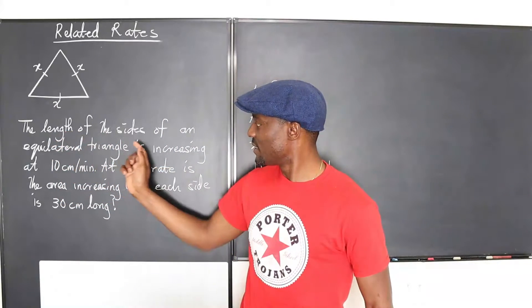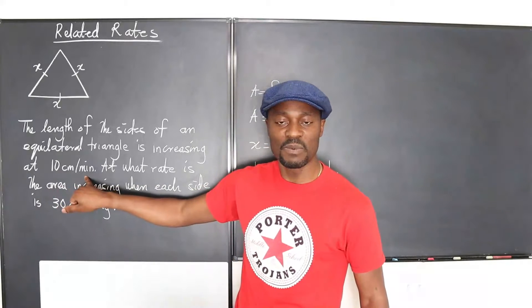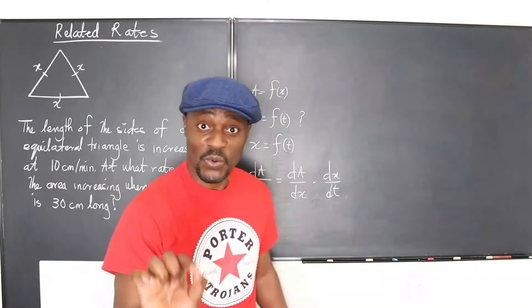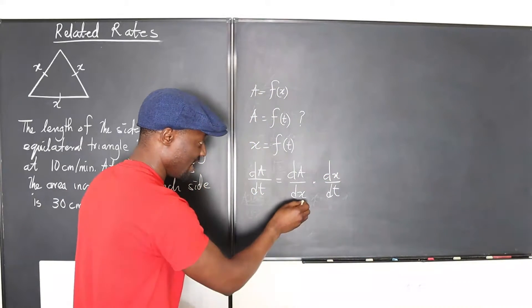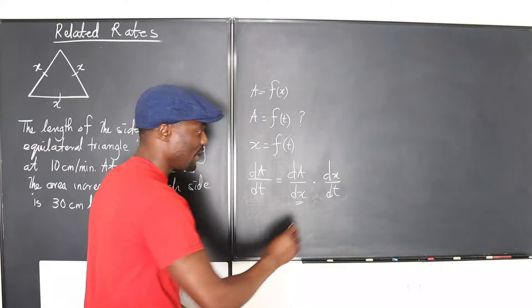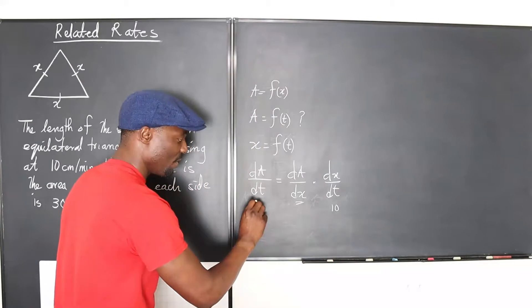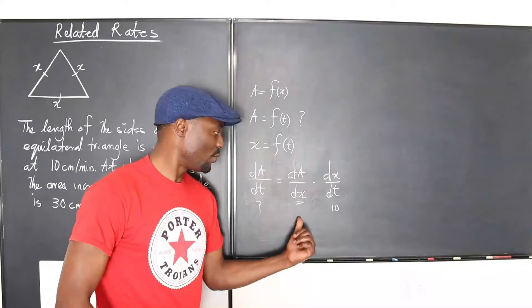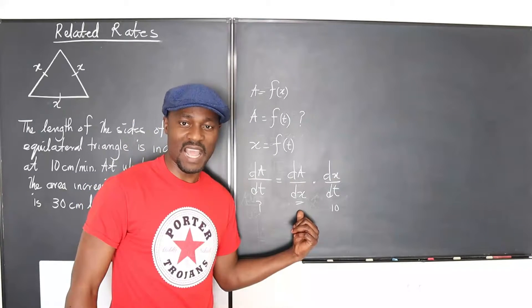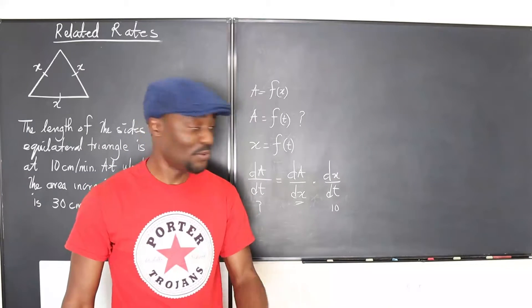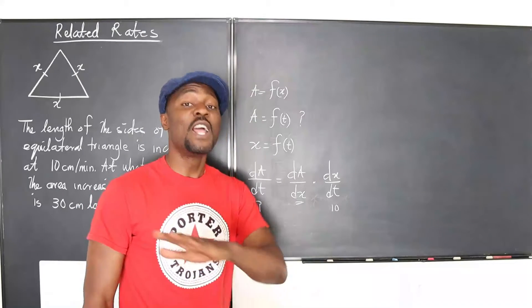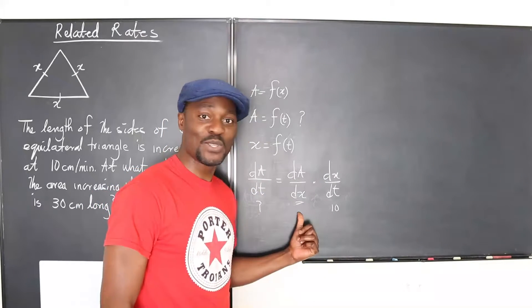We can say that dA/dt, which is what we're looking for, the rate of change of area with time, is equal to dA/dx times dx/dt. They've given us dx/dt - go back to the question. That is the rate at which the side is increasing, 10 centimeters per minute. So you see that the only thing you're looking for is this, because you know this already to be 10. You don't know this, but they expect you to be able to establish this, and that's what every student has to be able to do.